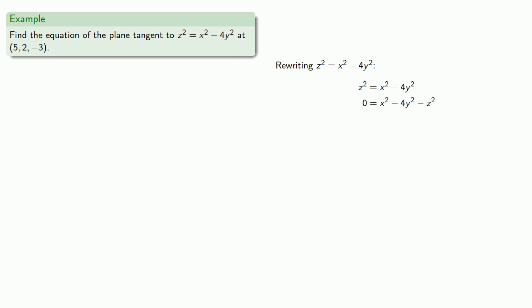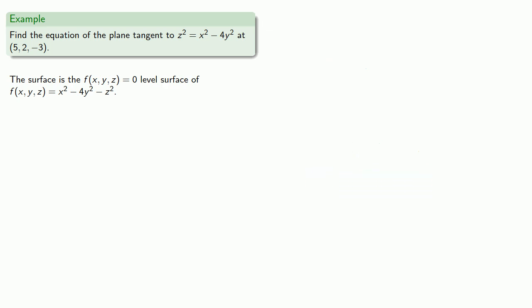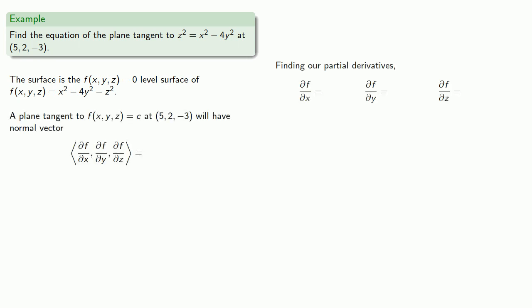Okay, maybe it's not that challenging, but that does give us the function of three variables. And so our surface is the f of x, y, z equals zero level surface of our function of three variables. The plane tangent at the point will have a normal vector whose components are the partial derivatives. So let's find those.